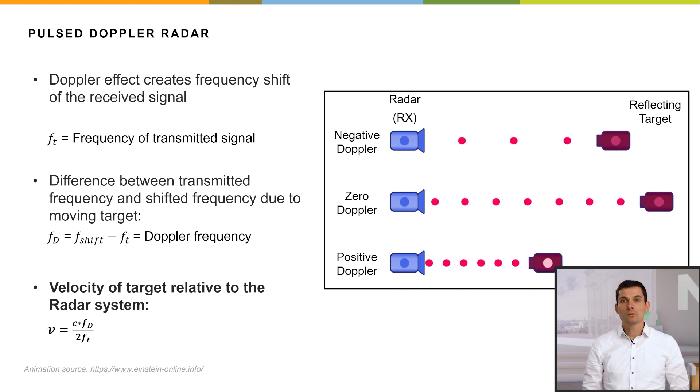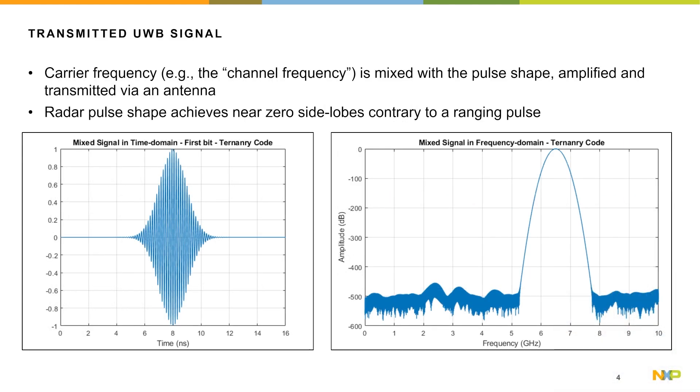Now, coming to ultra-wideband radar. We are using ultra-wideband pulses that are modulated with a carrier frequency, the so-called channel frequency. This signal is then amplified and fed to the antenna. The radar pulse shapes achieve nearly zero side lobes, which is contrary to a ranging frame or a ranging pulse. On the left-hand side, we see such an ultra-wideband signal in time domain. And on the right-hand side, we see the clean spectrum in frequency domain.